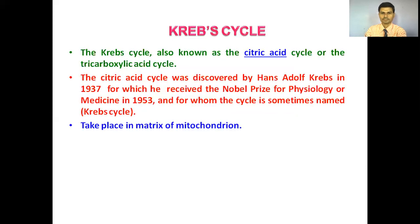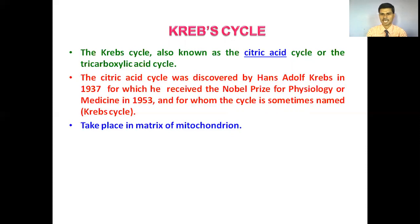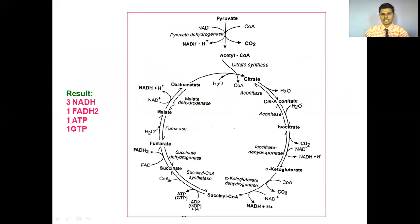Let's move toward the Krebs cycle. It is also known as the citric acid cycle, because the first stable compound found in the Krebs cycle is citric acid, which has three carboxyl functional groups — that's why this cycle is also called as the tricarboxylic acid cycle or TCA cycle. This cycle was discovered by scientist Hans Adolf Krebs in 1937, and from his name it is also called the Krebs cycle. For his discovery, Hans Adolf Krebs received the Nobel Prize in the year 1953.